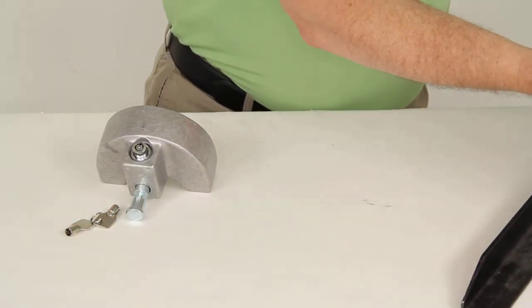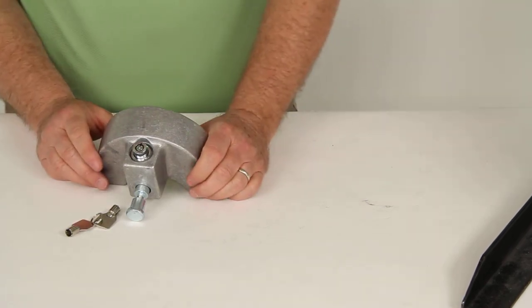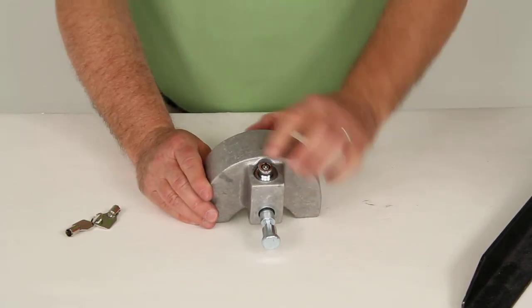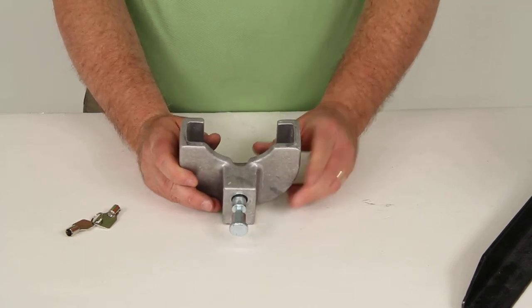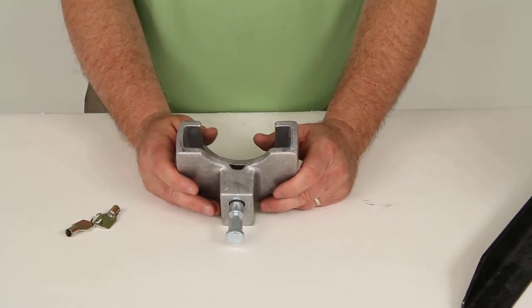Again, the application is for 2 and 5/16ths ball couplers that have the flat or the rolled lip. Now one other measurement: it will fit a maximum coupler width including the lip of 4 1/2 inches.